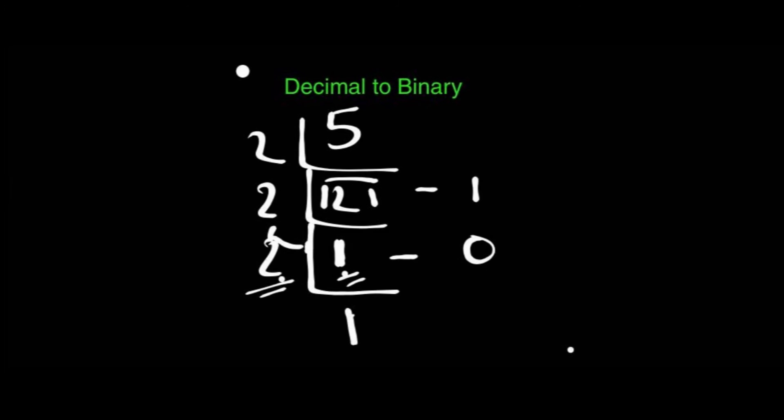Okay, now we can write down the binary. Just arrange or write the remainders from bottom to top direction. This is important. Write all the remainders from bottom to top. Then what will be the answer? The bottom one is taken first, then 0, then the first remainder 1. The binary equivalent of 5 is 101. In binary number system, each individual symbol, 0 and 1, is termed as a bit.